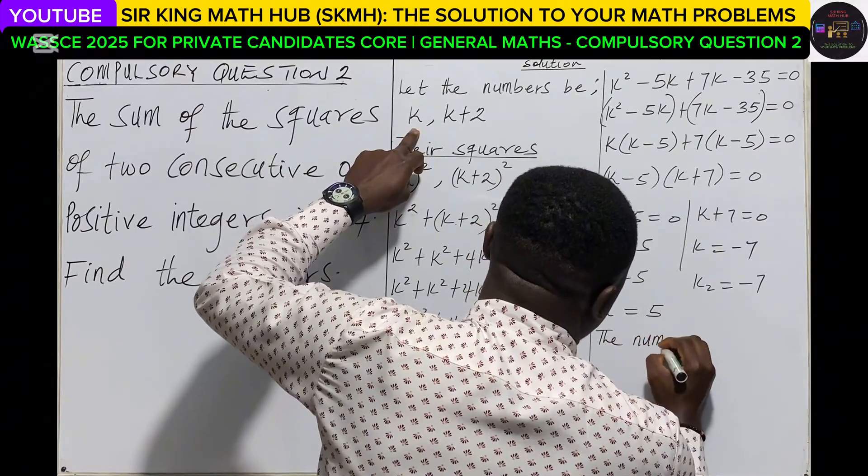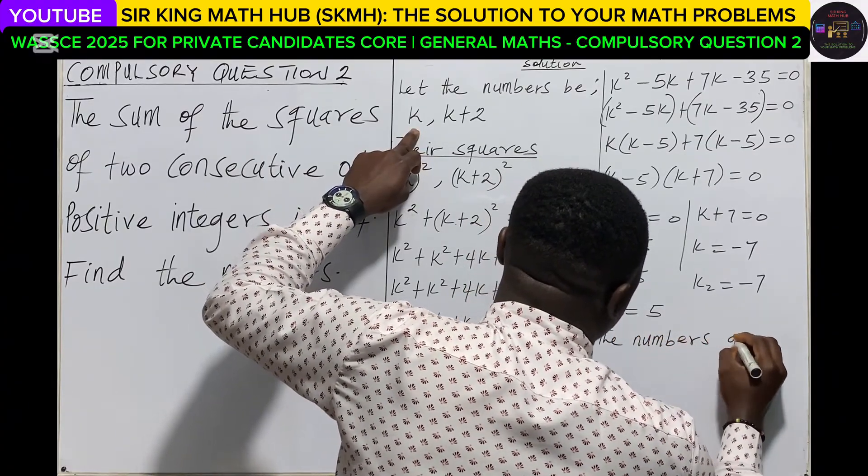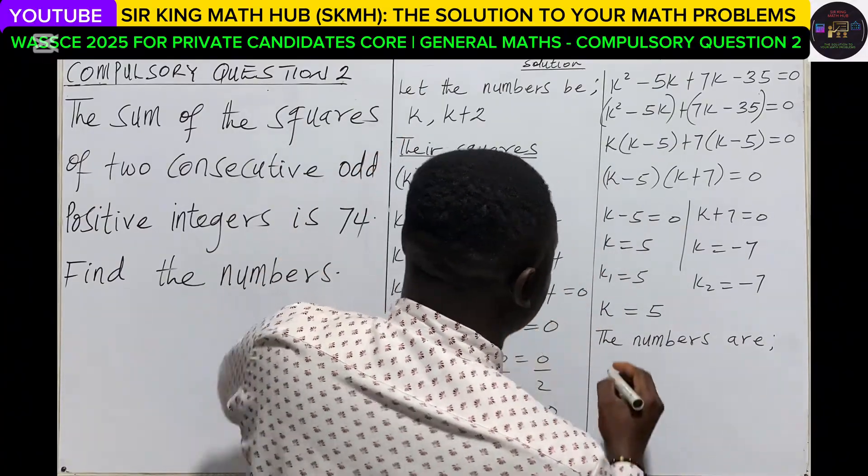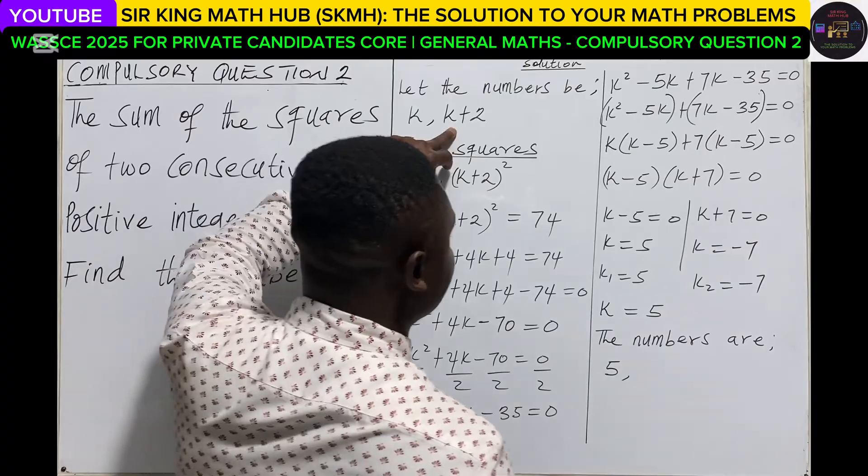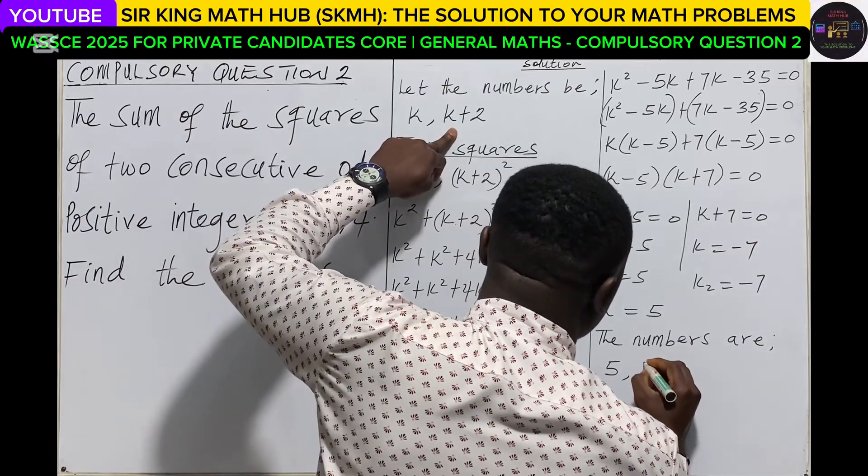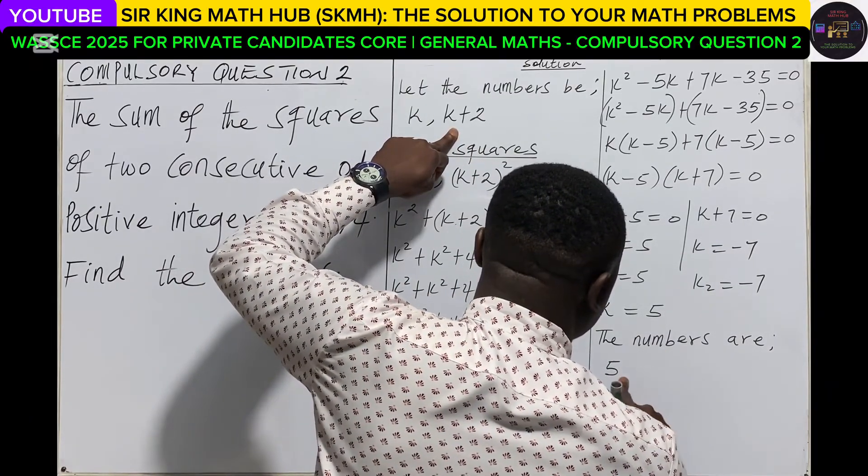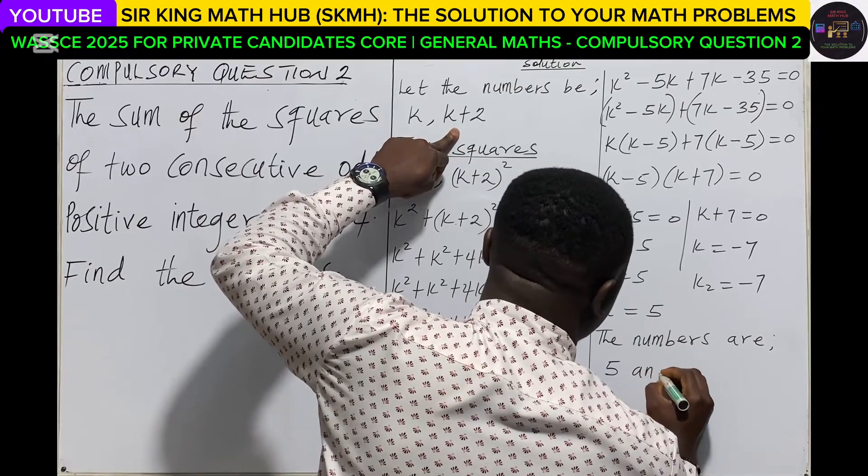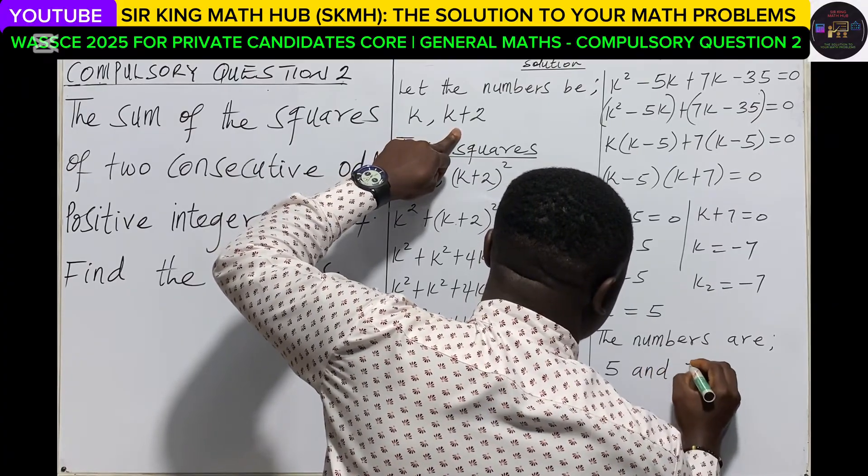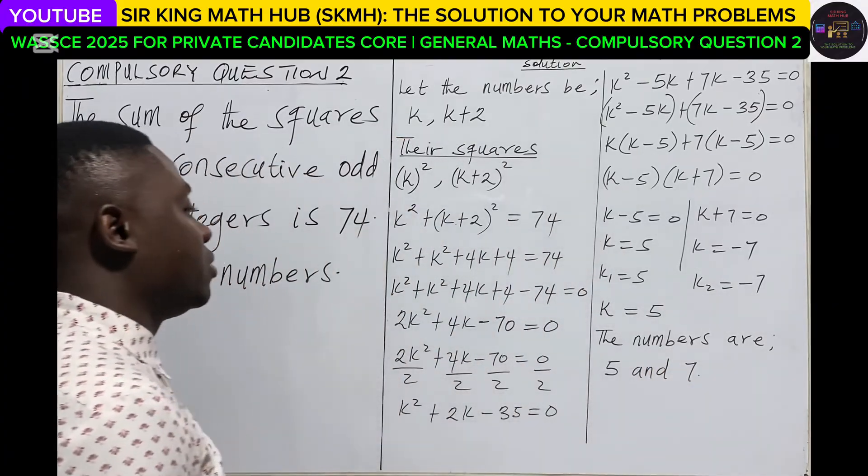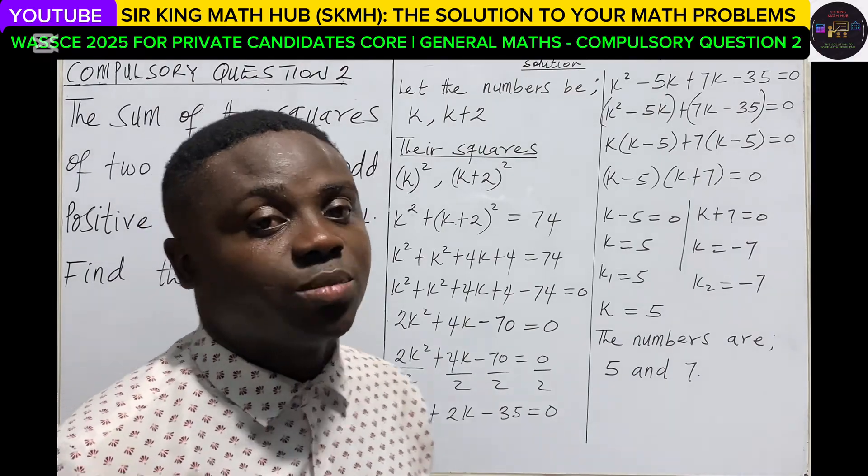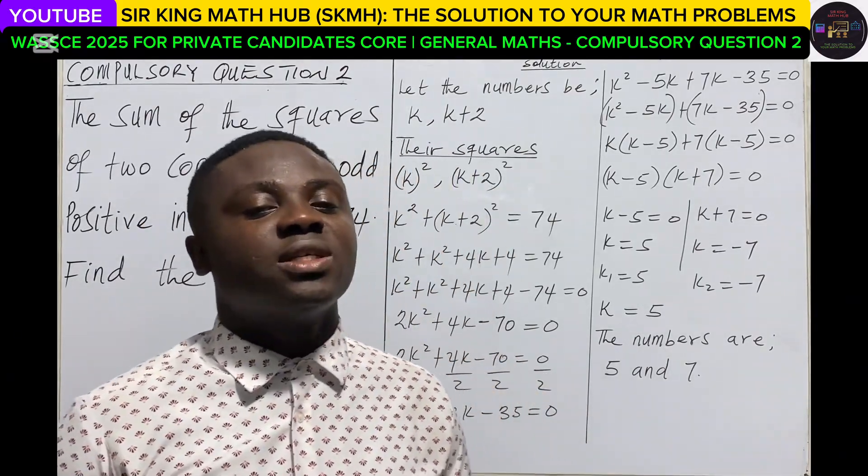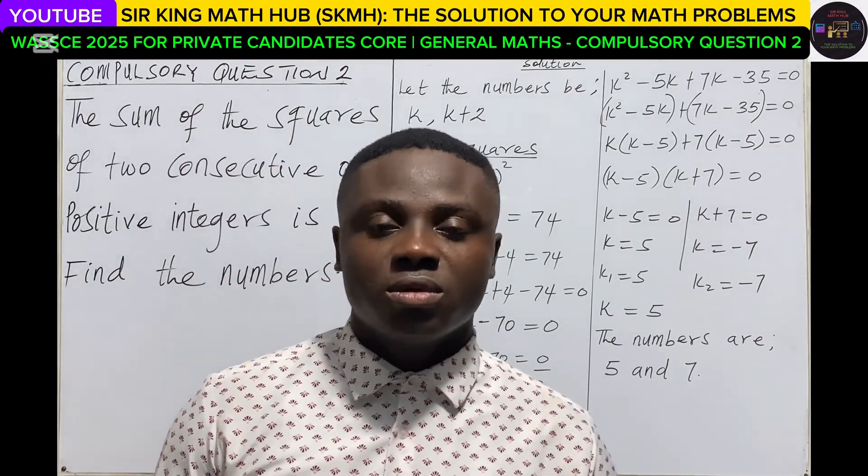The numbers: the first one is k, so the first one will be 5, and the second one will be k plus 2, that is 5 plus 2, which is 7. So 5 and 7, so these are the two consecutive odd positive integers. I hope you enjoyed this episode. Please like, comment and share the video. See you.